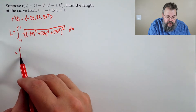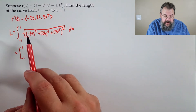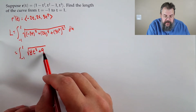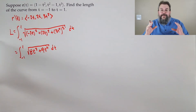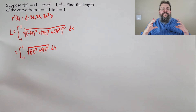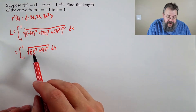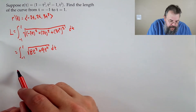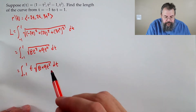So that's the integral from −1 to 1. The first two terms: (−2t)² = 4t² and (2t)² = 4t², making 8t². Then we have 9t⁴. That's 8t² + 9t⁴. That's definitely not going to factor as a perfect square, since squares should have three terms: a², 2ab, and b².